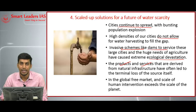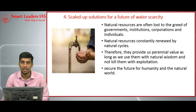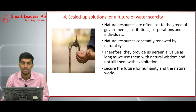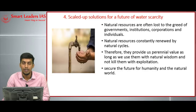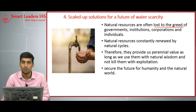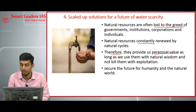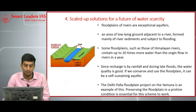Nature is the source from which we get products and services, but we can't afford to destroy the source itself. In the era of global free markets, the level of human intervention exceeds the scale of the planet. Gandhi once said nature has enough to meet the demands of humans, but not their greed. Natural resources are often lost to the greed of governments, institutions, corporations, and individuals. Natural resources are constantly renewed by natural cycles, providing perennial value as long as we use them with natural wisdom and do not kill them with exploitation.